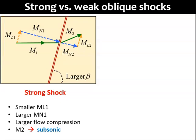That large Mn1 will cause a large flow compression. Because Ml1 is small, which is equivalent to Ml2, combining Ml2 and Mn2 will produce a small resultant vector M2, which will become a subsonic flow.